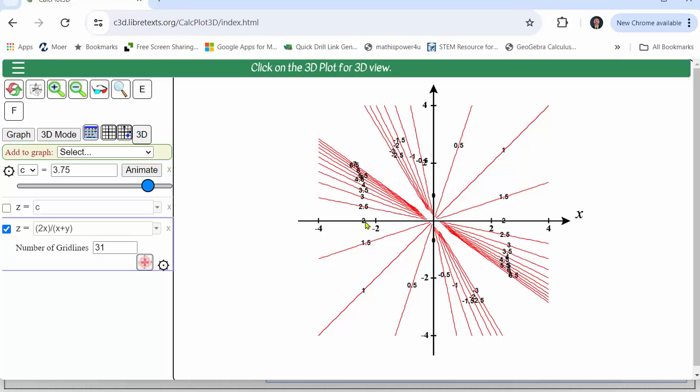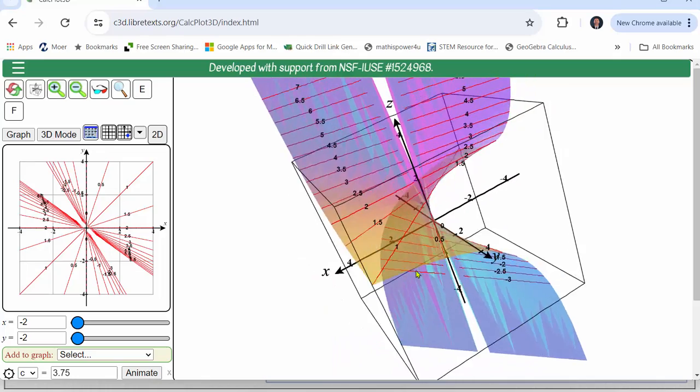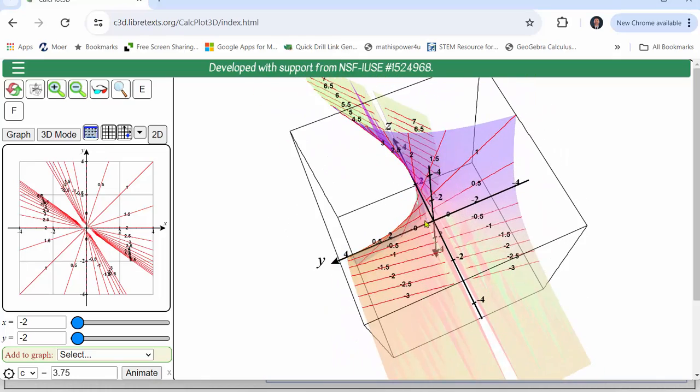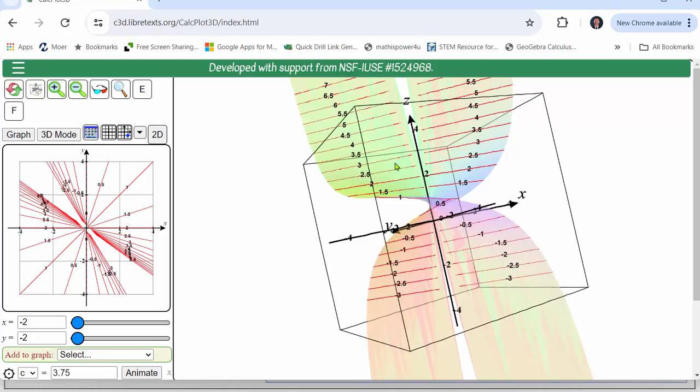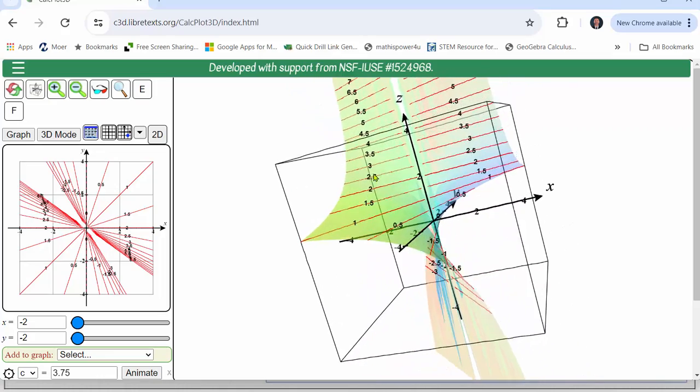And now let's take a look at the level curves actually on the surface. Notice the labels on each level curve, those labels are the z value or function value.